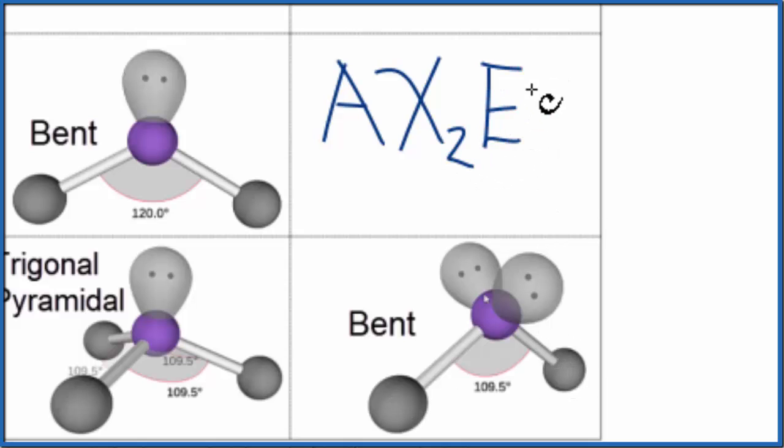In E, that would be the lone pairs. We have one, two, so two lone pairs. We have this AX2E2. You either memorize that that's a bent molecular geometry, or if you're allowed, you can look it up on a table.